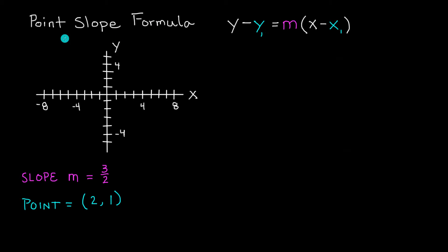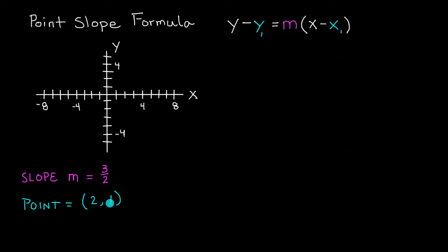In this tutorial I'm going to do an introductory example to the point-slope formula of a line. When we're using the point-slope formula, we're trying to find the equation of a line and we're given the slope of that line and a single point on the line. For our example, we're trying to figure out what is the equation of a line that has the slope of 3 over 2 and has the point (2, 1) on the line.